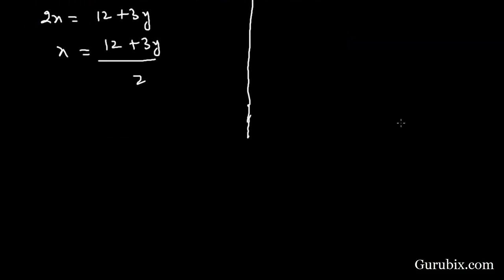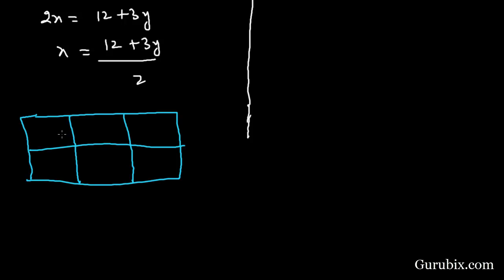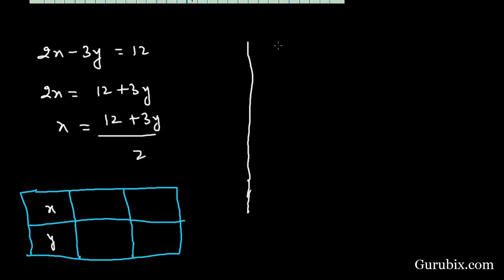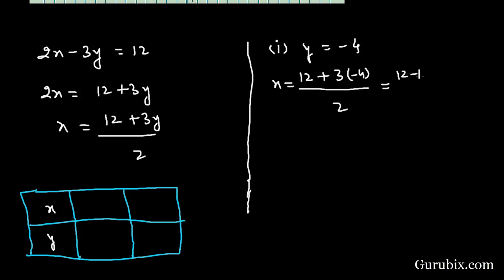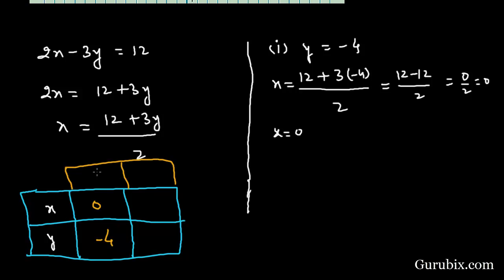We draw a table with 2 rows and 3 columns to find points on this line. Putting y = -4: x = (12 + 3×(-4)) / 2 = (12 - 12) / 2 = 0 / 2 = 0. So when y = -4, x = 0. We denote this point as P.